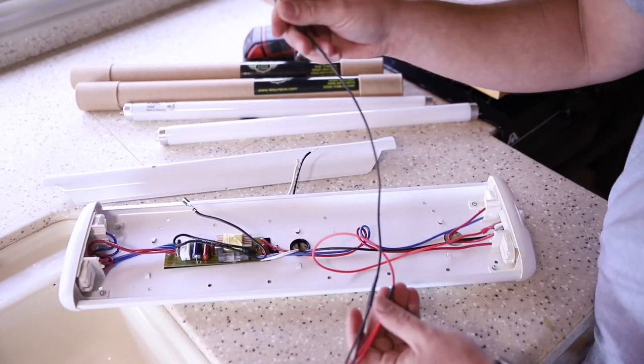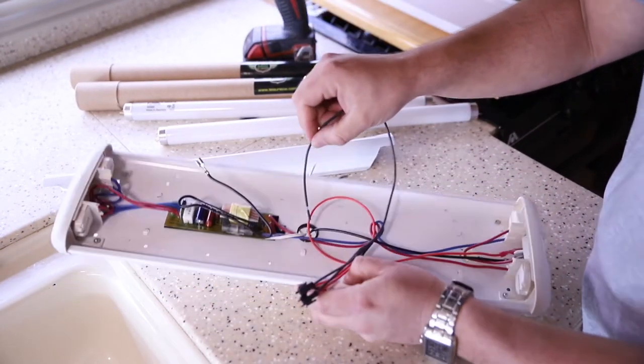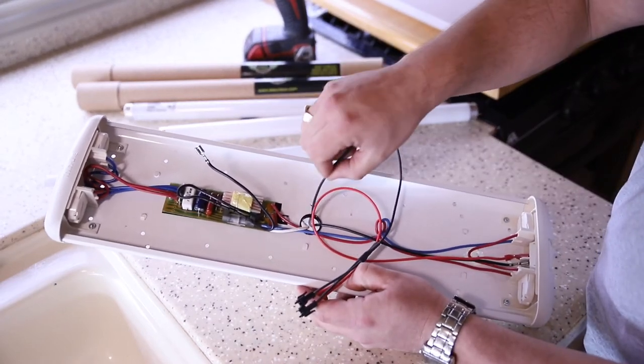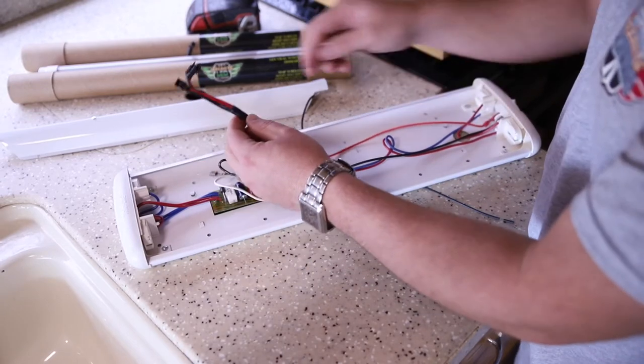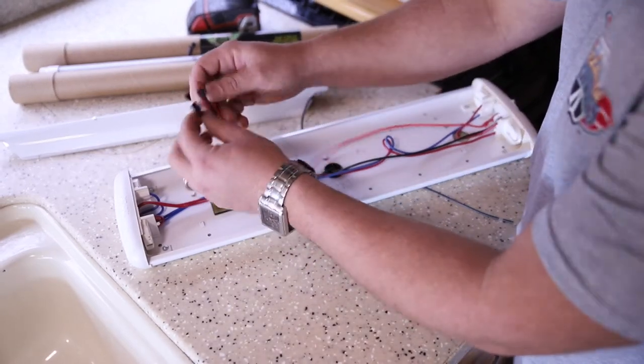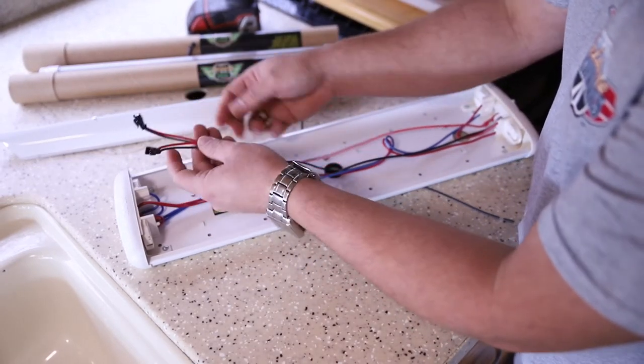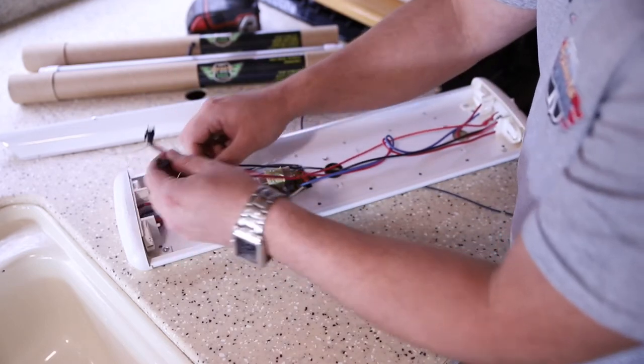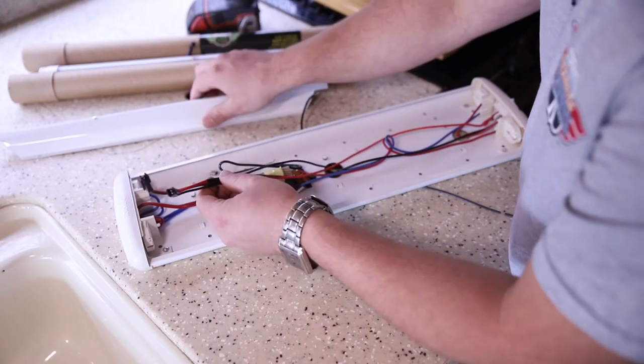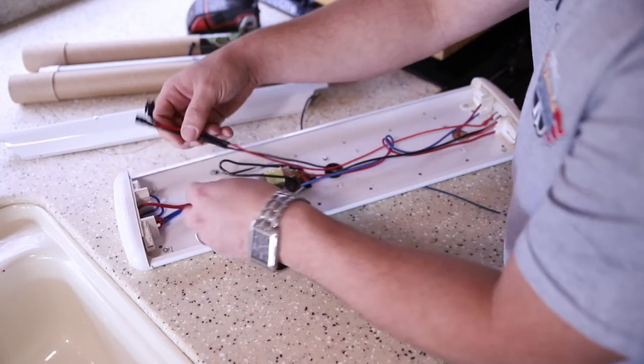Then this wire is going to go back up into the roof so we can get our ground. Now that we have our spade connector connected, what we're going to try and do is figure out the best way to lay these in so they're not going to get pinched. Sometimes you can put them over here, sometimes you may have to put them over here. On this application we're going to put it at the end.